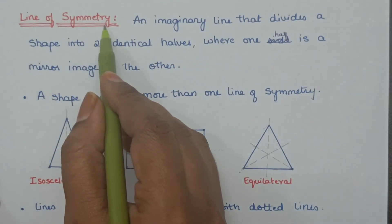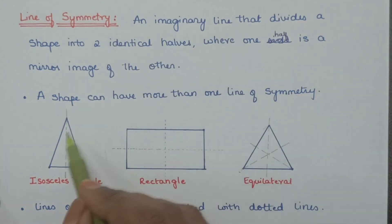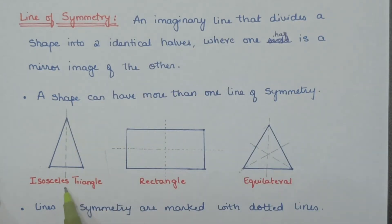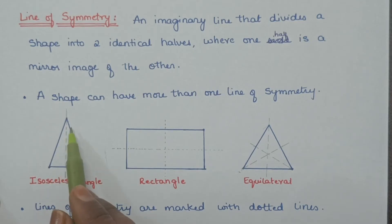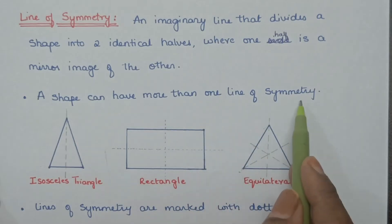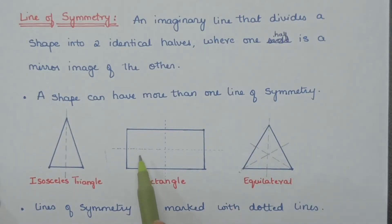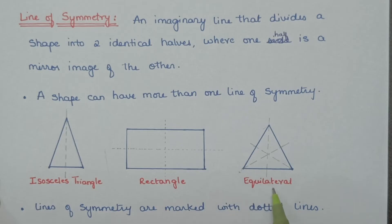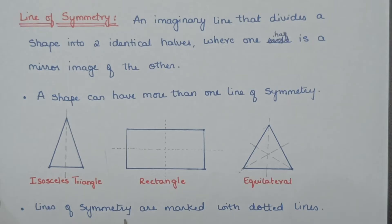Line of symmetry. An imaginary line that divides a shape into two identical halves where one half is a mirror image of the other. A shape can have more than one line of symmetry. A rectangle has two lines of symmetry, and an equilateral triangle has three lines of symmetry. Lines of symmetry are marked with dotted lines.